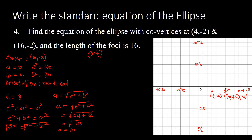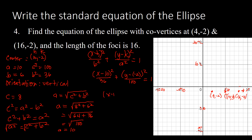Since the orientation is vertical, the standard form is (x - h)²/b² + (y - k)²/a² = 1. With center (10, -2), b² = 36, and a² = 100, the equation is (x - 10)²/36 + (y + 2)²/100 = 1. This is the standard equation of the ellipse. Thank you for watching — please like this video.